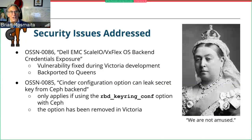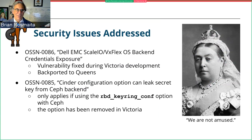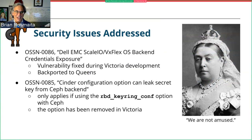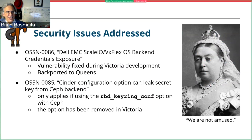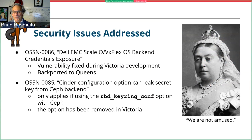We addressed some security issues. OSSN-0086 covers Dell EMC ScaleIO/VXFlexOS backend credentials exposure — it was fixed during the Victoria development cycle and backported as far as Queens. The vulnerability did not occur in Victoria because it was fixed before release, but be aware of it if you use Dell EMC ScaleIO. There's also OSSN-0085: a Cinder configuration option that could leak a secret key from a Ceph backend. It only applied to Ceph deployments using the RBD keyring comp option, which was deprecated in Usuri and removed in Victoria.